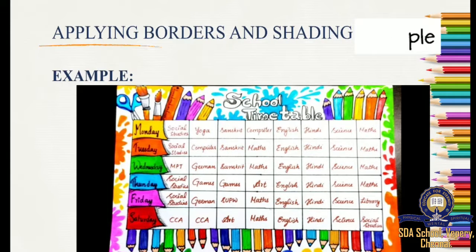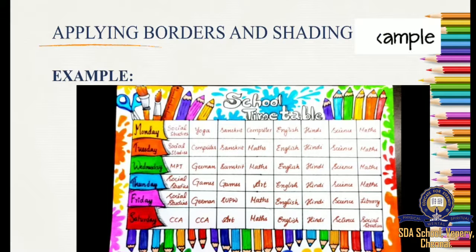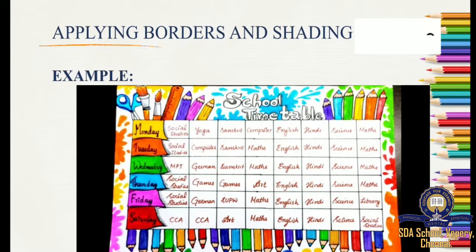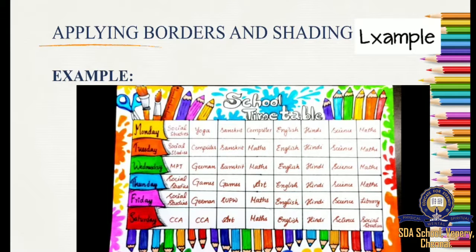one student makes the chart. He does not simply bring his plain timetable — he makes it in a designed way. He colors it. The student puts lots of effort and does a lot of designing, like the example shown here. Likewise, in the computer also, the tabular column can be made beautifully with lots of different kinds of borders, shading, and colors.